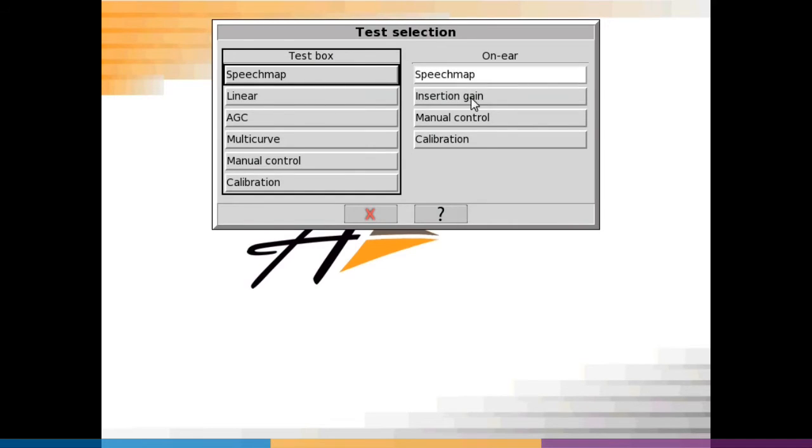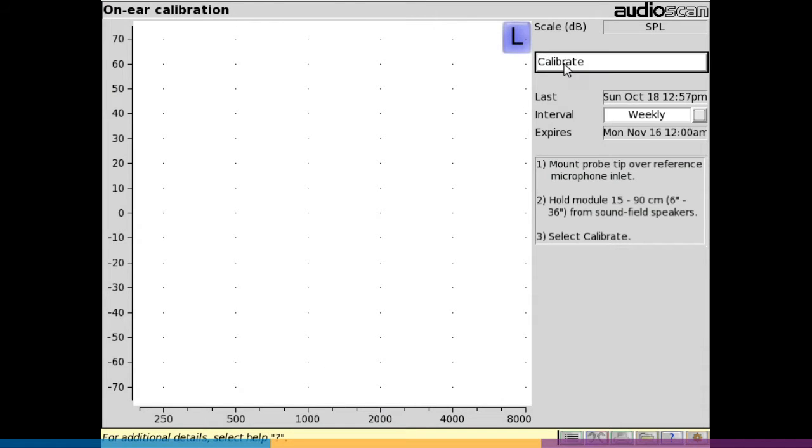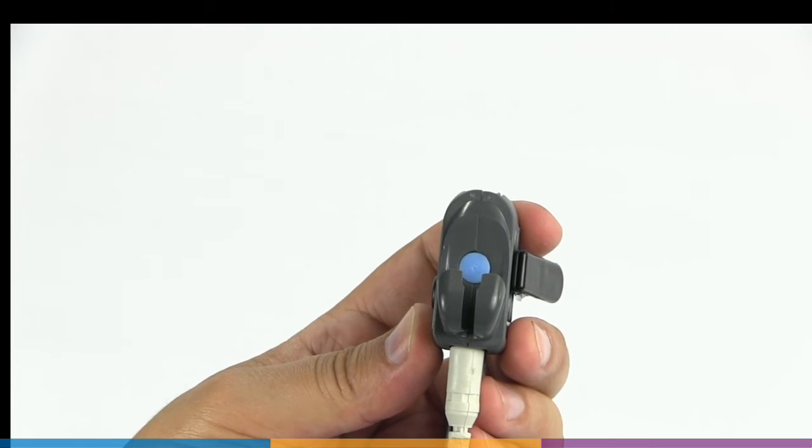Select the on-screen calibrate button for the probe mic you are calibrating. On Verifit 2, the probe dock is designed to hold the microphones during calibration.